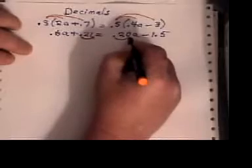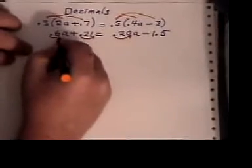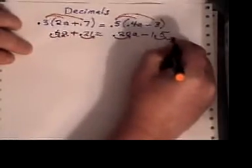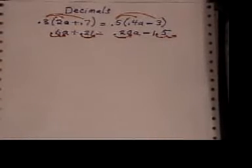But then I'd have to move this two places to the right, and this two places to the right, and this two places to the right. So that's quite legal. What you're really doing is multiplying everything by 100.